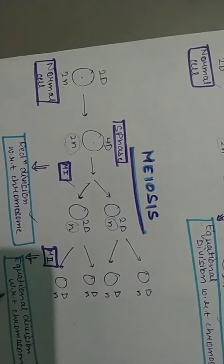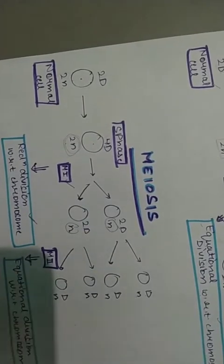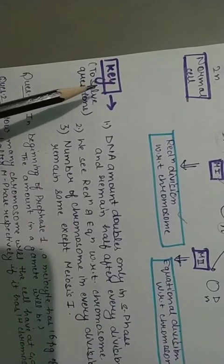Lekin jo meiosis 2 hai woh equational division hai with respect to chromosome. To n se n raha. To ab hum iske key points dekhte hai ki key points kya kya the iske.